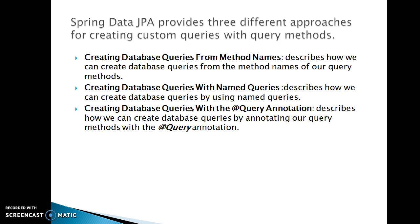Spring Data JPA provides three different approaches for creating custom queries with query methods. The first approach is creating database queries from method names. This describes how we can create database queries from the method names of our query methods. We have to follow some rules to specify the query method, and from that method name, Spring Data JPA will derive the SQL query.